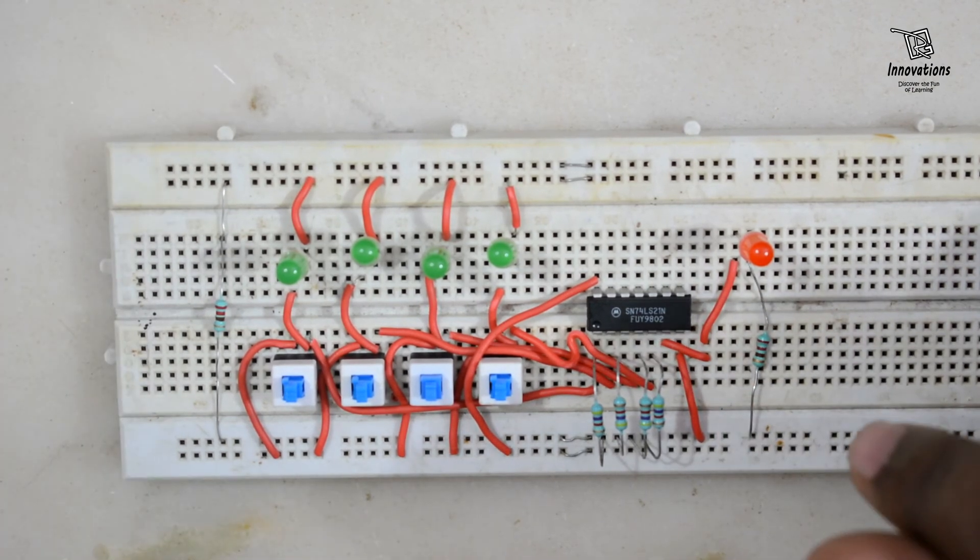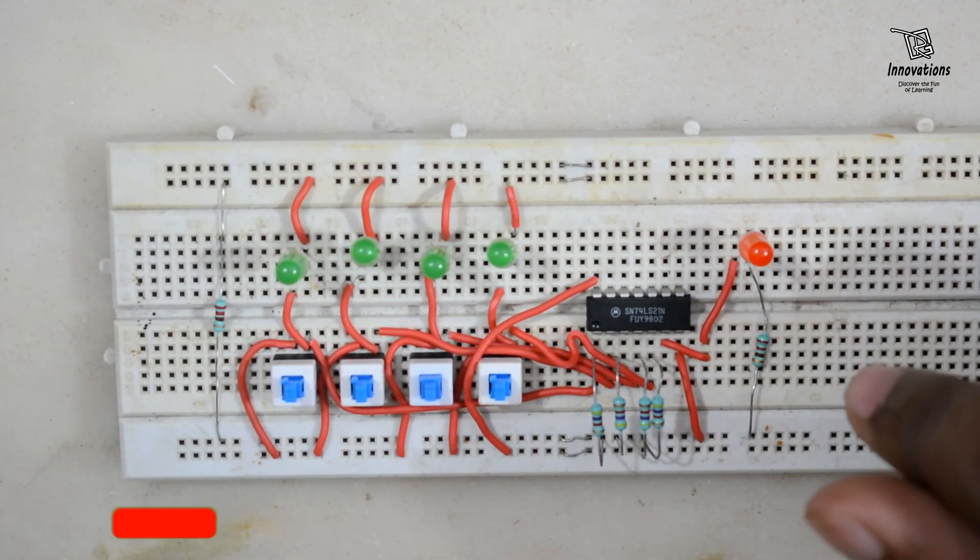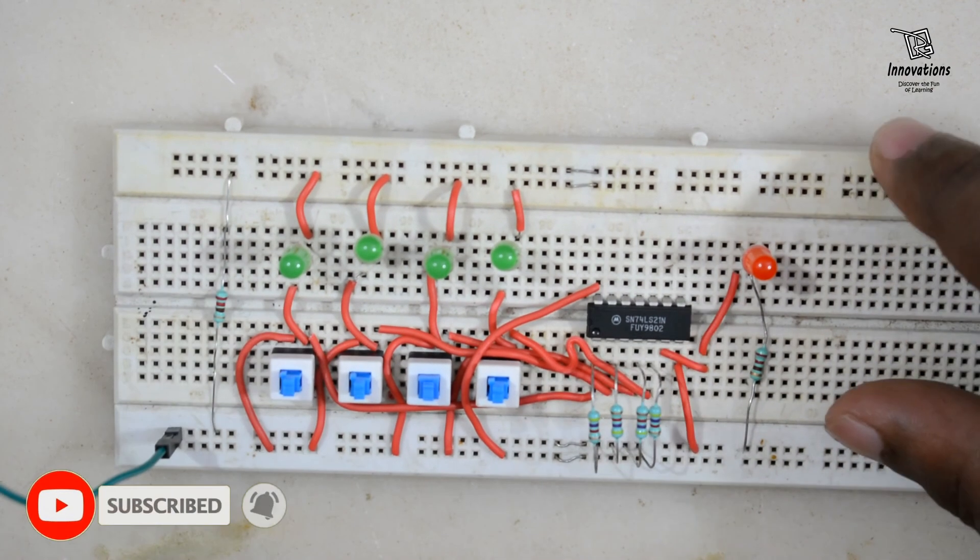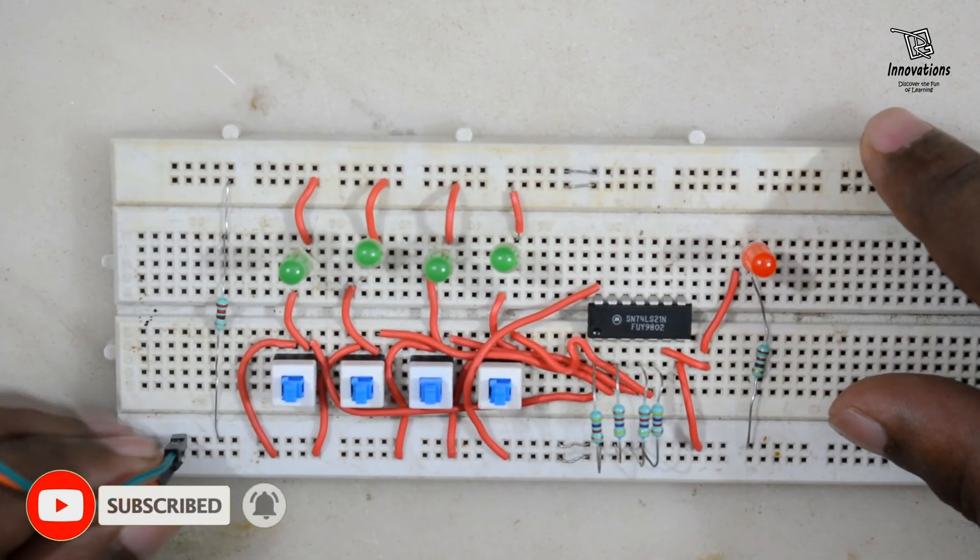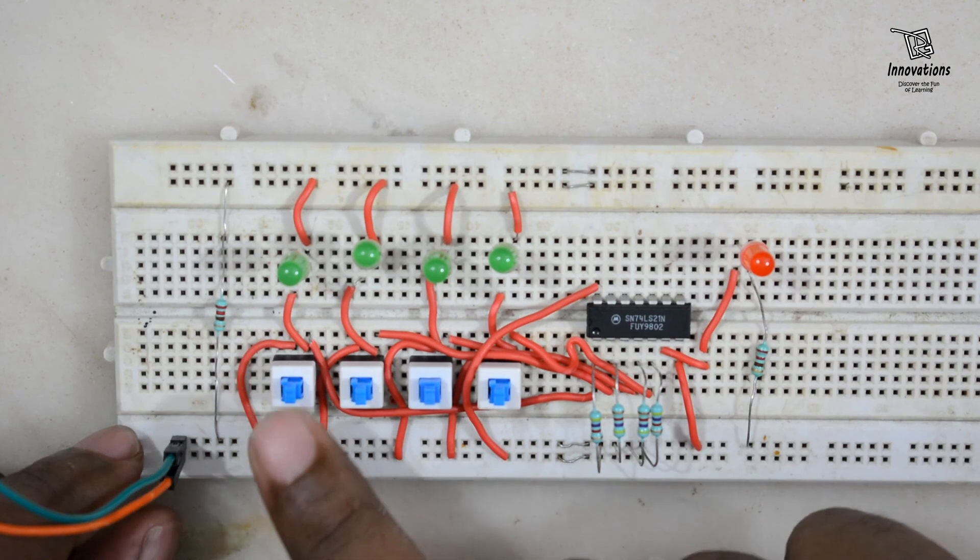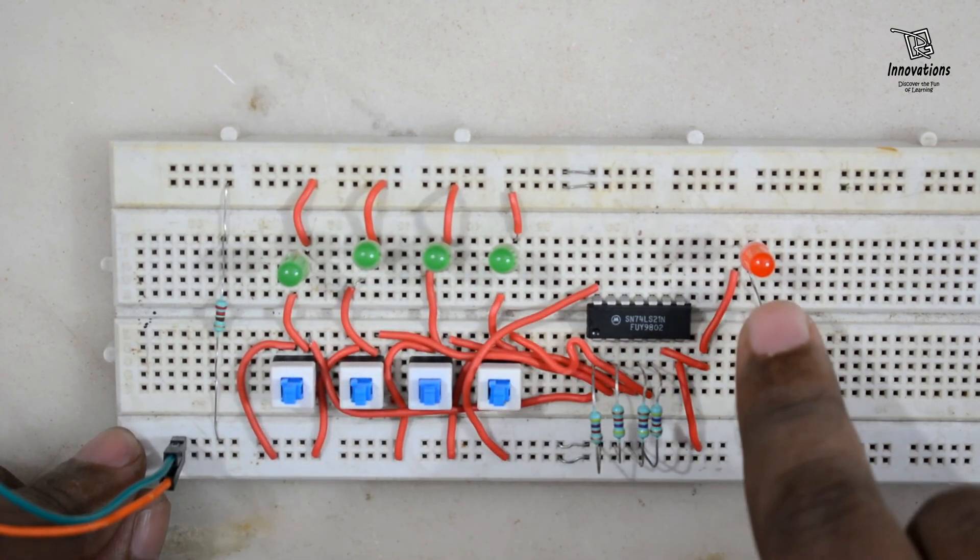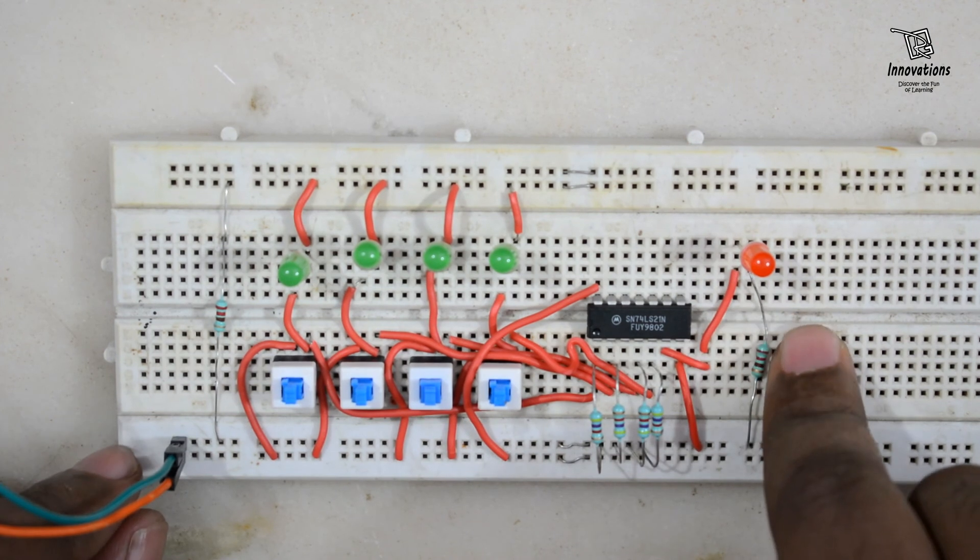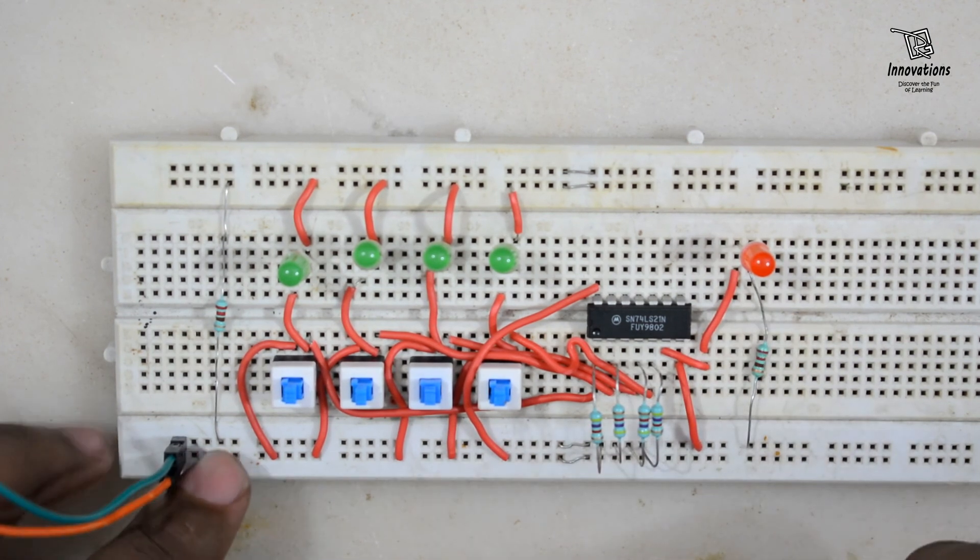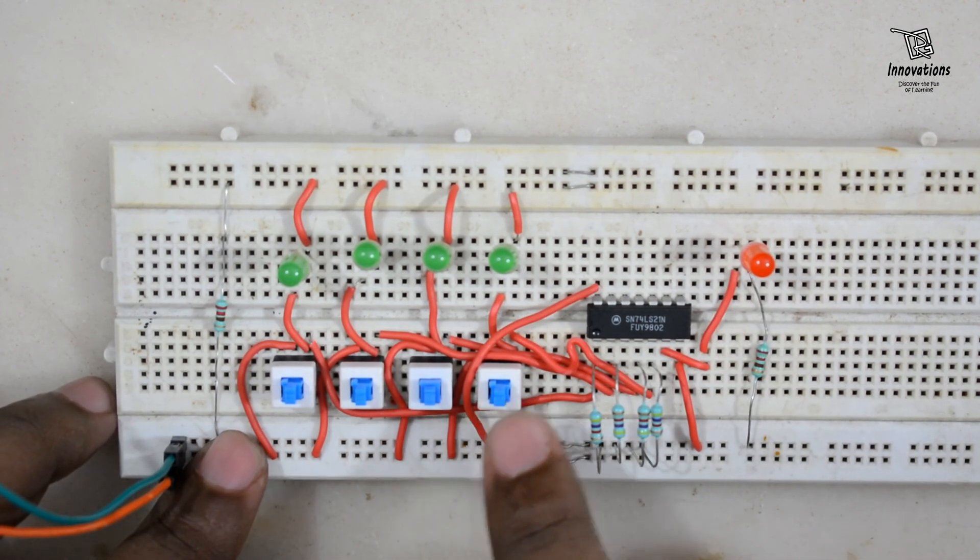Now we'll connect the 5V power supply to this board, connecting negative and positive. You can see all inputs are OFF and input status is low, so the output is also low. Now we'll check according to the truth table of the 4-input AND gate. 0000 is 0.